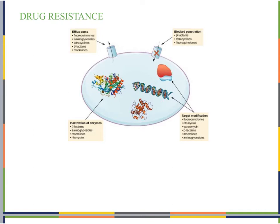So what do we mean by drug resistance? How are bacteria resistant? There are four different ways they can be resistant to particular antimicrobials: an efflux pump, blocked penetration, target modification, and inactivation of enzymes.